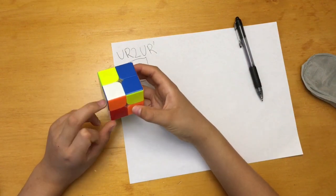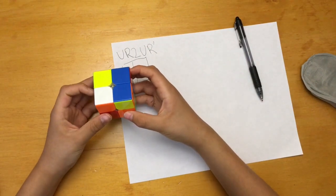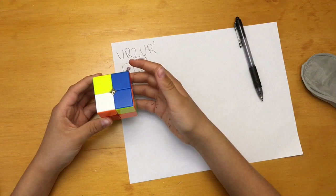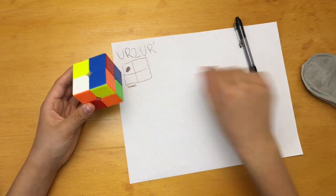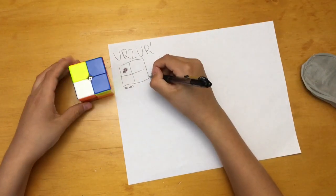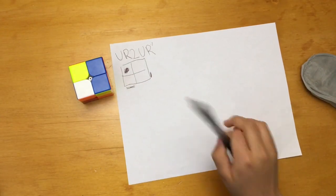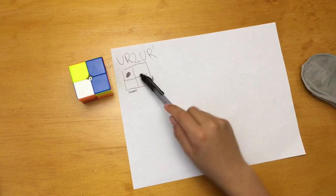Once again let's track this one. U R2 U R', this one will be right here. So once we've tracked three we can deduce from this what the last corner will be.